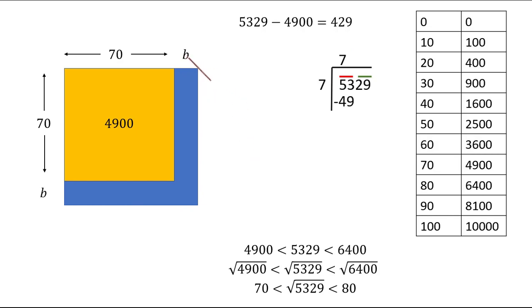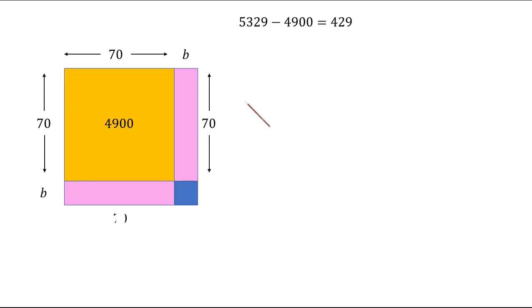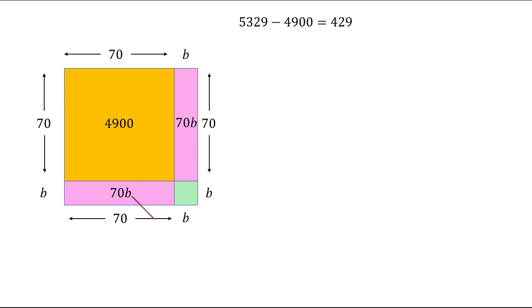Let's say the remaining length is B units. We draw a pink rectangle such that its length equals the side of the yellow square (70) and its breadth is that remaining part B. We draw another such rectangle on the other side. These two rectangles each have area 70B. The remaining corner piece is a small square with area B². So the area of this pink rectangle plus this pink rectangle plus the green square equals 429.